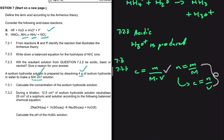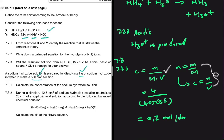Substituting: mass = 4 g, molar mass of NaOH = 40, volume = 500 cm³ converted to dm³ = 0.5. Putting that in the calculator gives a concentration of 0.2 mol·dm⁻³. That is the concentration of sodium hydroxide.